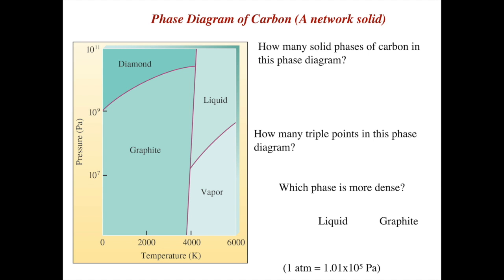Let's take a look at some more phase diagrams. The first one I want to show you is carbon. Carbon is a network solid. It is not molecular. The phase diagrams we were looking at before for water and carbon dioxide, those are molecular substances. Carbon is not molecular.